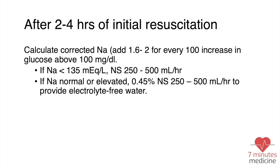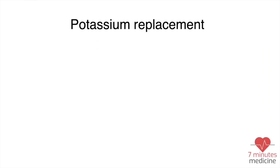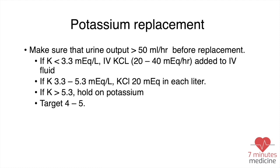To calculate the corrected sodium: for every 100 mg/dL increase in glucose, we add 1.62 to the sodium. If the corrected sodium is less than 135, we continue to give normal saline. If it is normal or high, we switch to half normal saline, because it provides some electrolyte-free water.